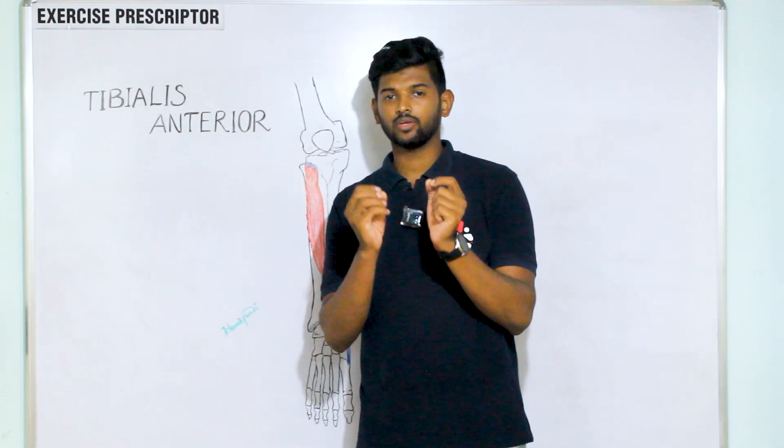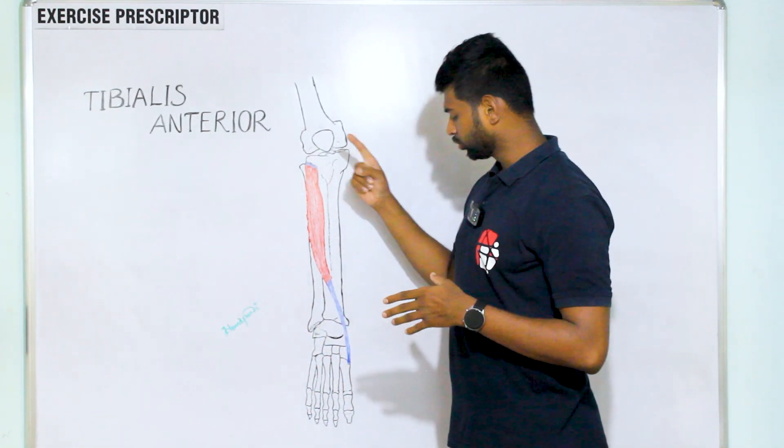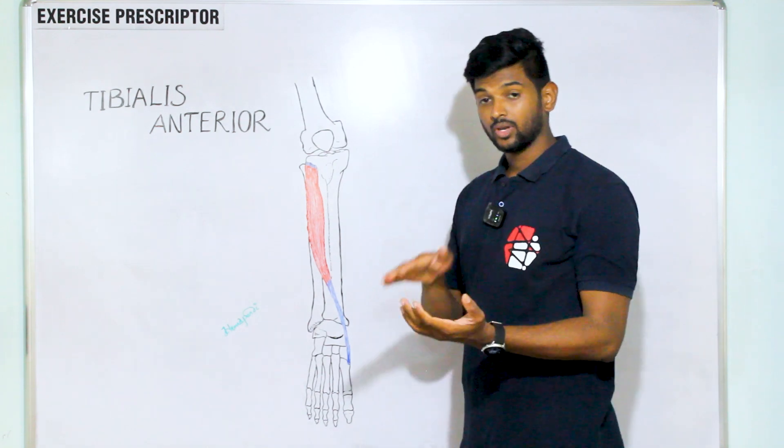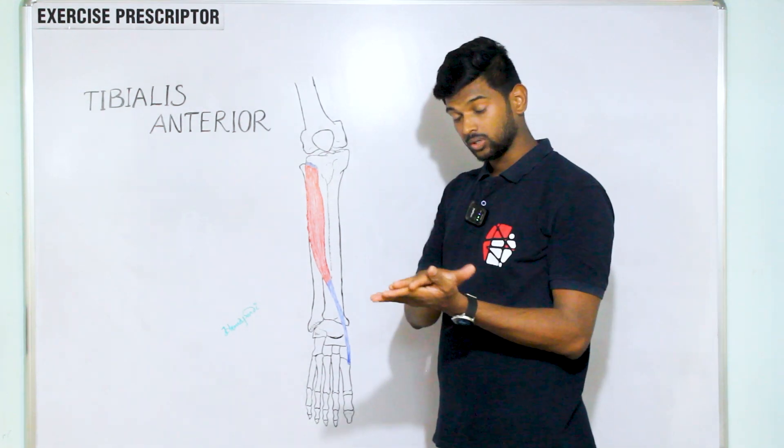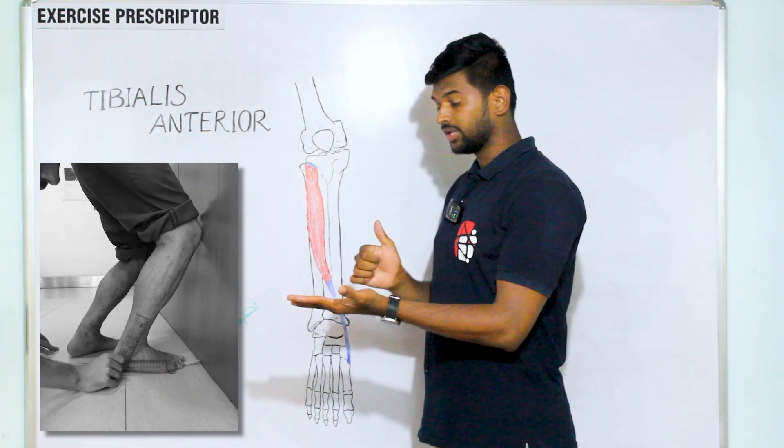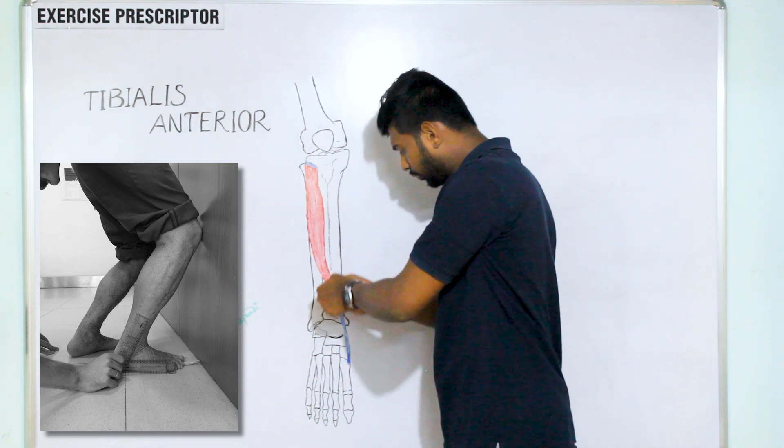When it comes to reverse mover action, origin has to move towards insertion, insertion has to be fixed. When our feet is planted on the ground, the knee moves forward. Knee moves forward and the fibers are pulled downward.